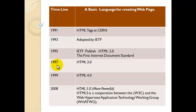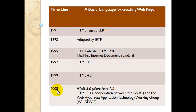In 1997, HTML 3.0 was released. In 1999, HTML 4.0 was released. In 2008, HTML 5.0 was then released. This is the more powerful version.